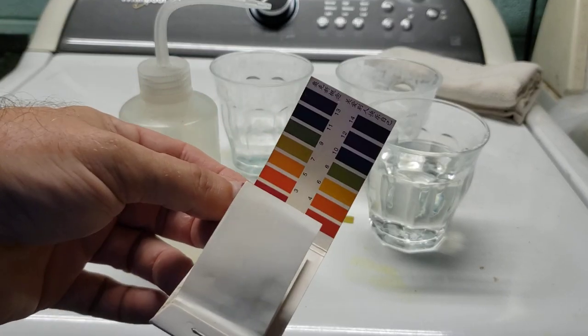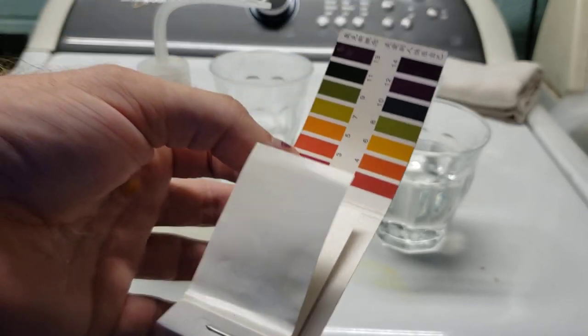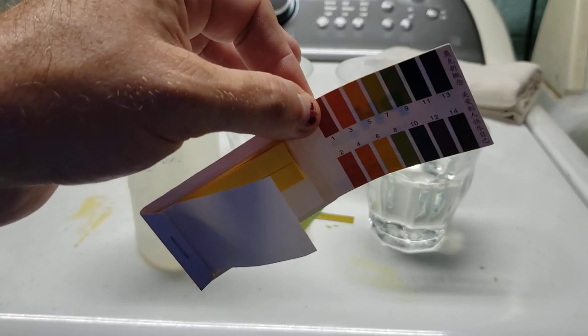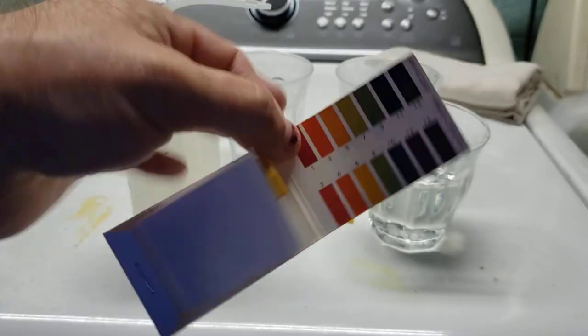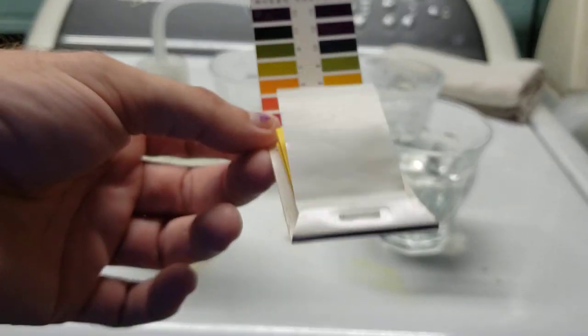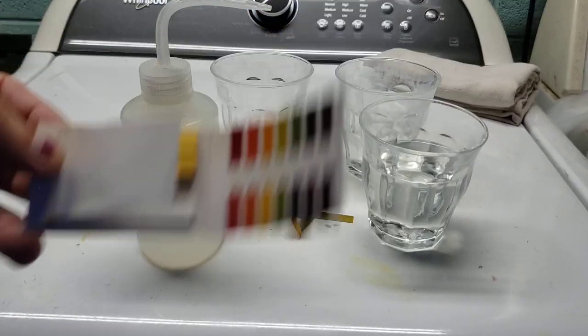So these little test papers do work in a very ballpark sort of sense. If all you need to know is do I have my pH somewhere around neutral, these are definitely good enough for you. If you want to know whether it's 7.3 or 7.5, don't bother with these, you need a much more highly accurate meter.